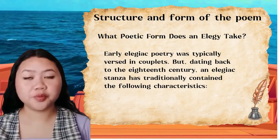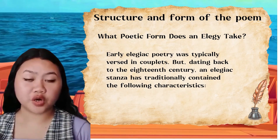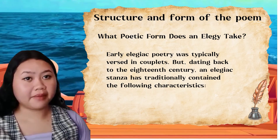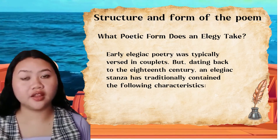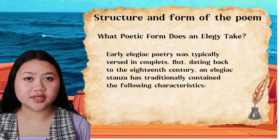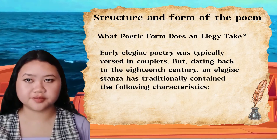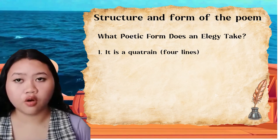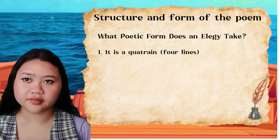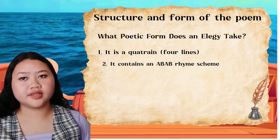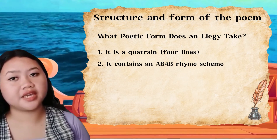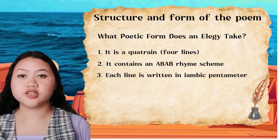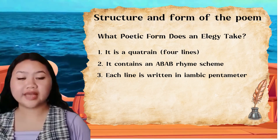Early elegiac poetry was typically versed in couplets. Dating back to the 18th century, an elegiac stanza has traditionally contained the following characteristics: first, a quatrain or four lines; second, an ABAB rhyme scheme; and third, each line is written in iambic pentameter.